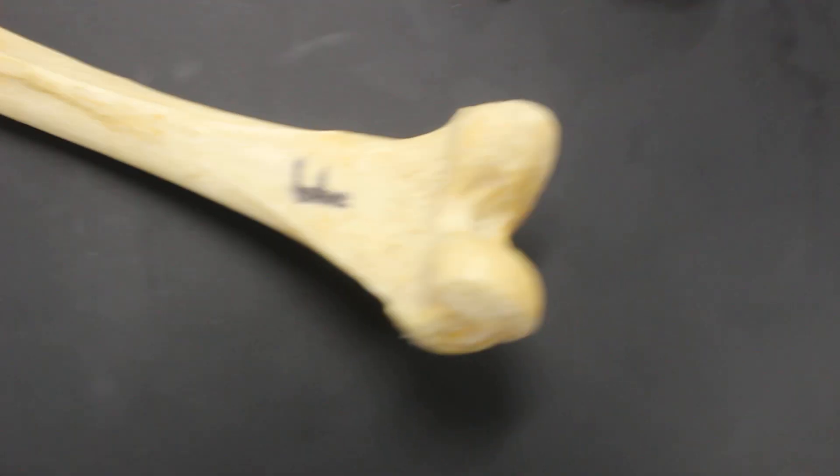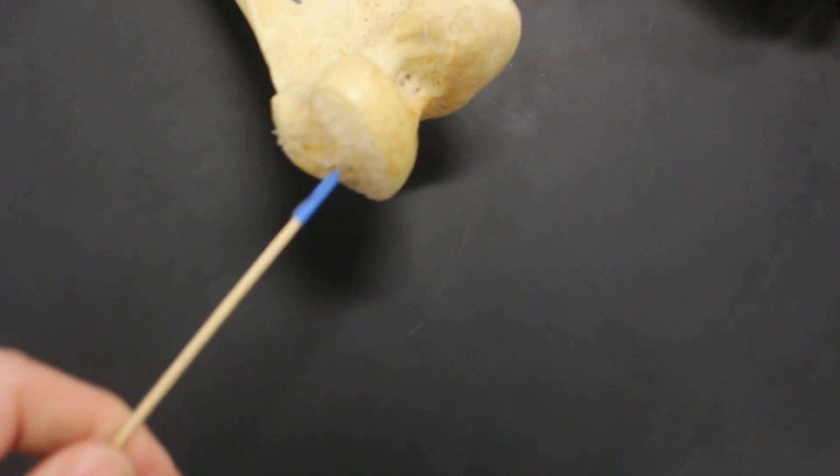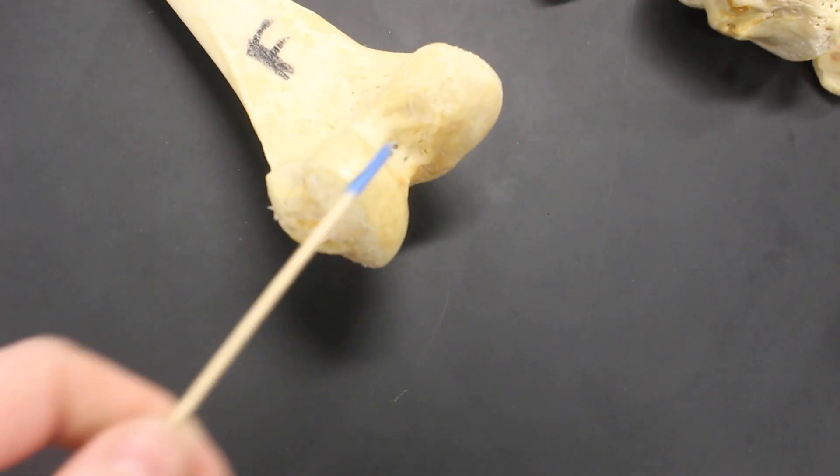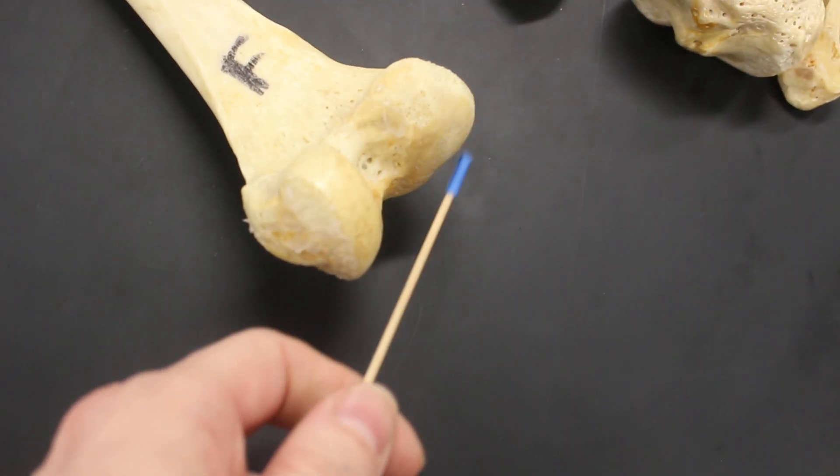Then we go down to the distal end, and we see we have the medial condyle and the lateral condyle.